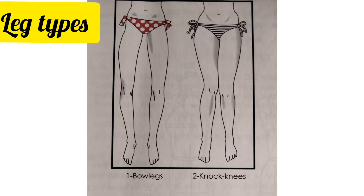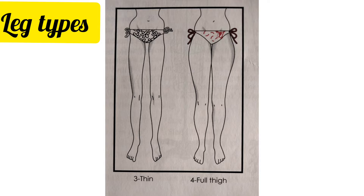Next up is the leg type. The first model has bow legs while the second model has knock knees. It's also possible that your clients may have thin thighs or full thighs. These leg types are very important in drafting patterns of skirts, shorts, trousers, or jeans.